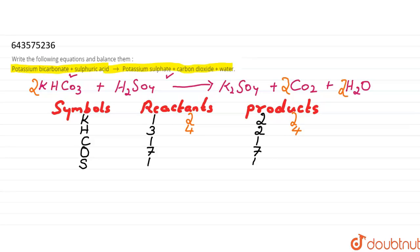Carbon atoms: two on the reactant side and two on the product side — balanced. Oxygen atoms: three times two equals six, plus four gives ten on the reactant side. On the product side: four plus two times two equals eight, plus two equals ten. Sulfur is already balanced at one and one. The number of entities on the reactant side is now equal to the product side — the equation is balanced.